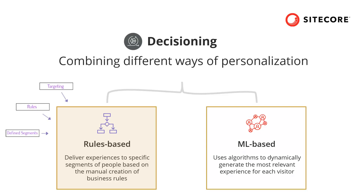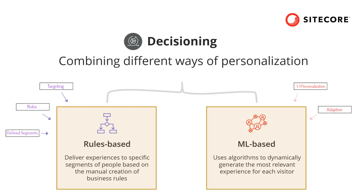On the other side, machine learning-based personalization offers what's called one-to-one personalization, because it adapts to user behavior, tries to predict their next action and needs, and then delivers the best experience based on these understandings. For example, it's usually used in recommender systems such as upselling and cross-selling scenarios. Decisioning is a combination of both.